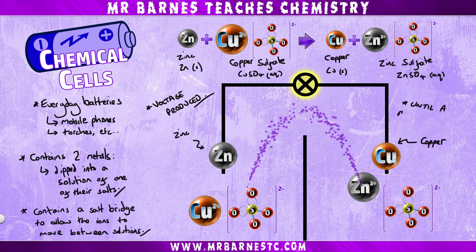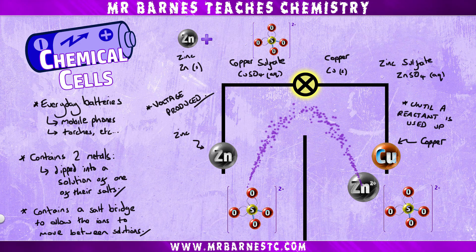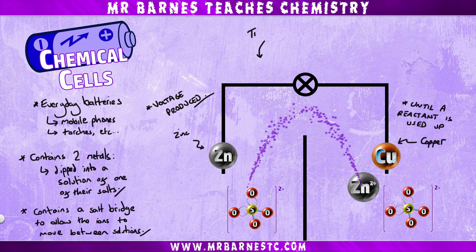A chemical cell will continue to produce a voltage until one of the reactants is used up. When this happens it can no longer produce a voltage — we say the battery is flat.